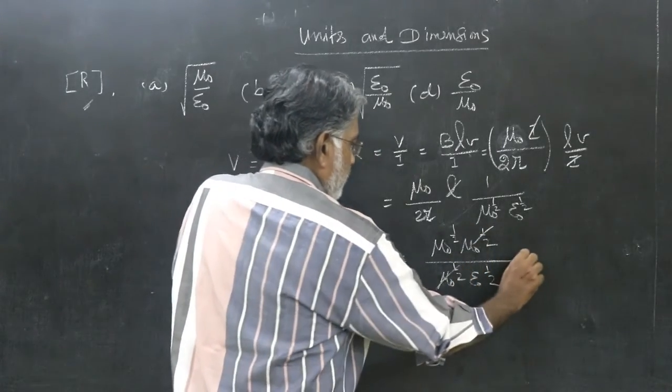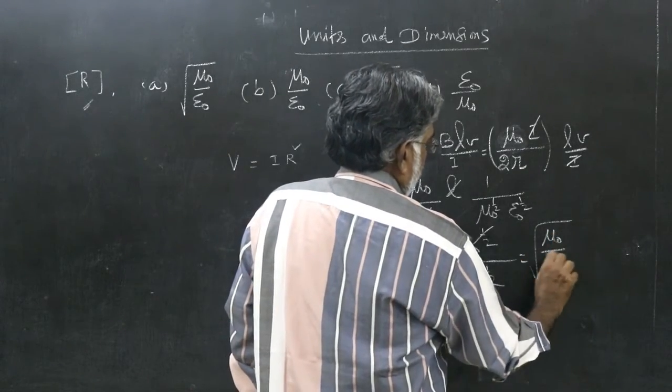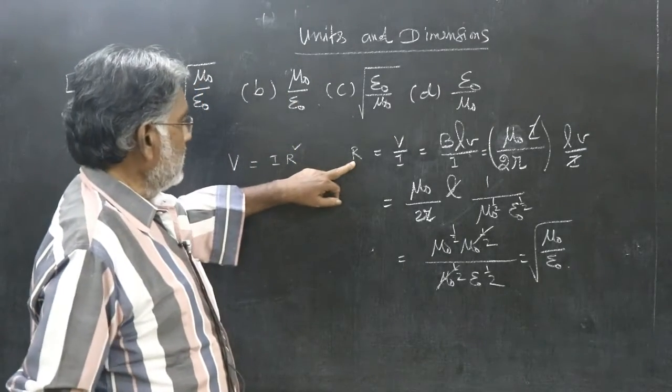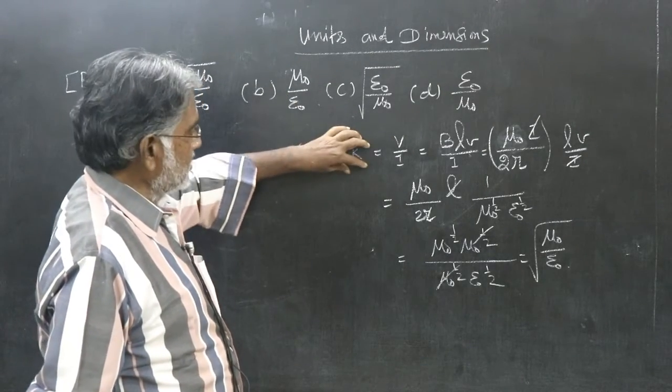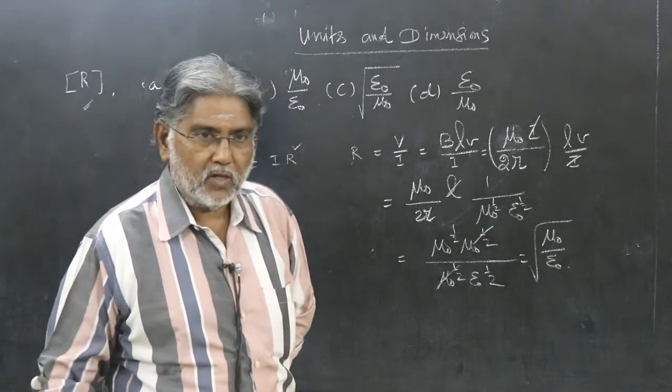When mu naught half, you can cancel. So this is simply root of mu naught by epsilon naught. What is there on the left side? Resistance. So dimension of resistance should be same as dimension of root of mu naught by epsilon naught.